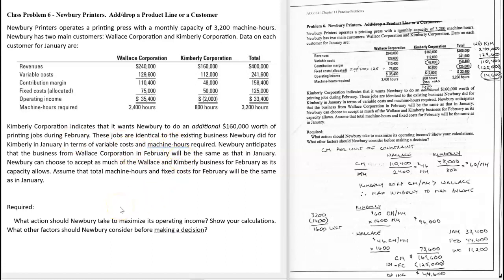There are two categories here. This company operates a printing press with a capacity of 3,200 machine hours, and they have two main customers. The Wallace Corporation, they're making about $35,000 from this company, and Kimberly, they've got a $2,000 loss from Kimberly.